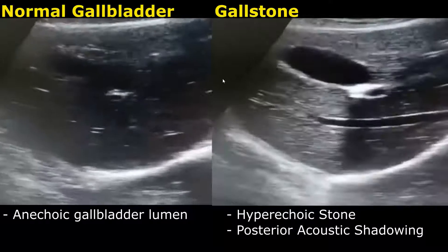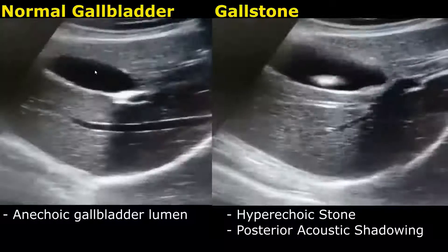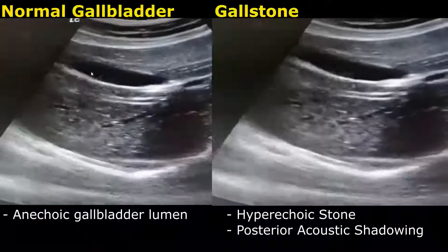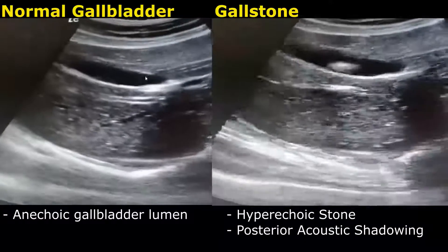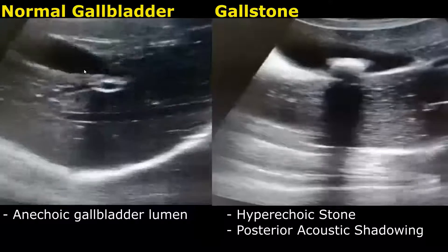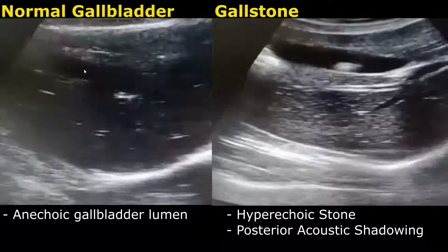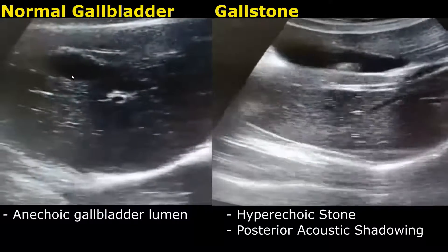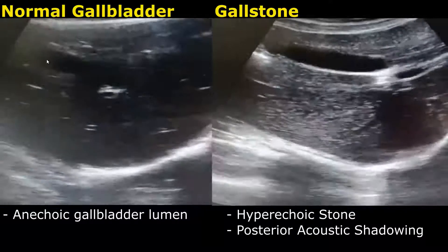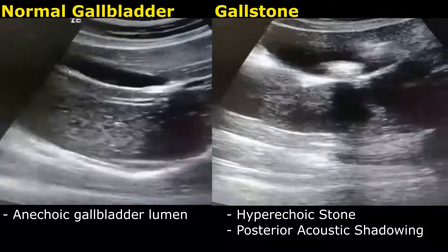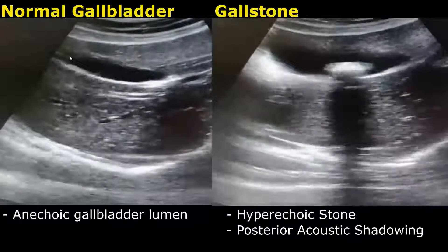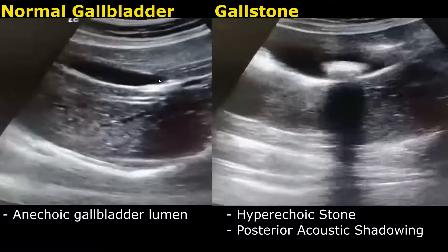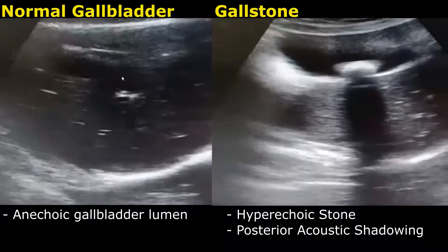In the normal image, the gallbladder has a clear anechoic lumen. The wall thickness also looks normal. The gallbladder fundus is here, towards the left side of the image, and the gallbladder neck is over here.